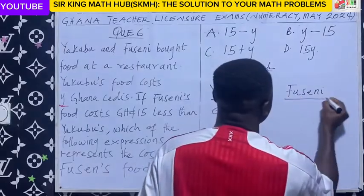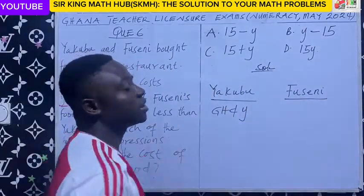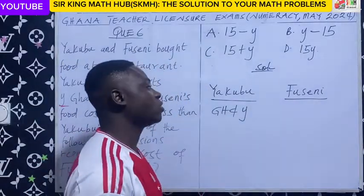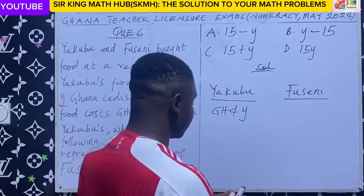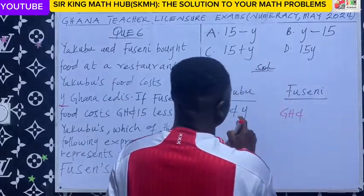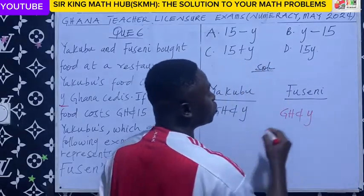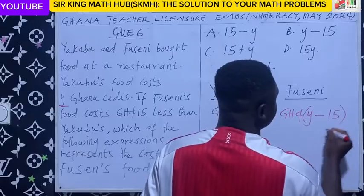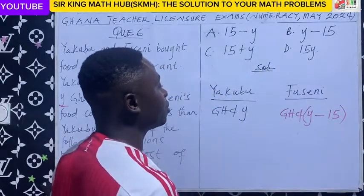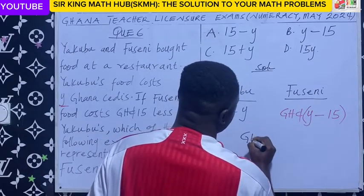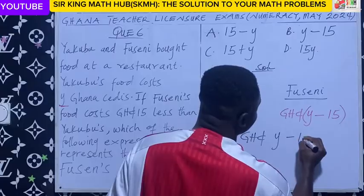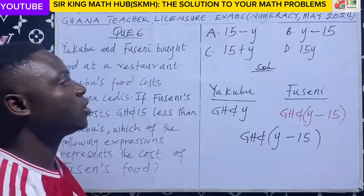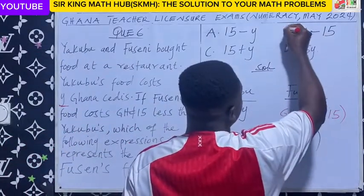So how do we write an expression for 15 cedis less than the cost of Yakubu's food? As we did for Kofi and Amma, we need to subtract the 15 cedis from the cost of Yakubu's food. We know that Yakubu's food costs Y Ghana cedis, so minus the 15 Ghana cedis. In conclusion, Husseini's food will cost Y minus 15 Ghana cedis. Looking at the alternatives, the right answer is B.